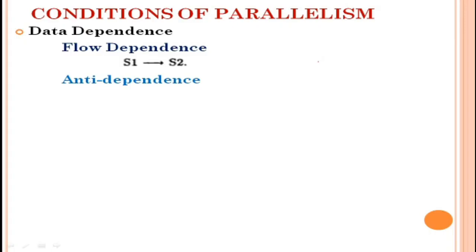Anti-dependence is defined as follows: statement S2 is anti-dependent on statement S1 if S2 follows S1 in program order and if the output of S2 overlaps with the input of S1. It is indicated by a direct arrow crossed with a bar from S1 to S2.